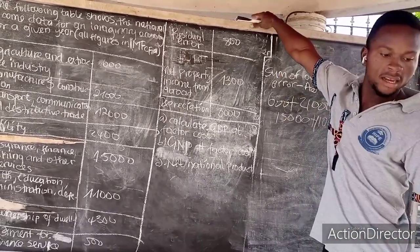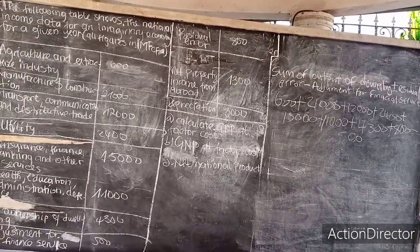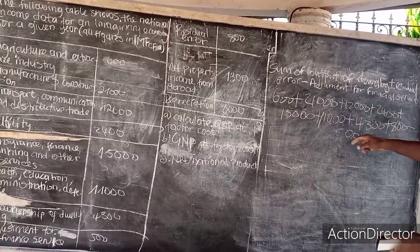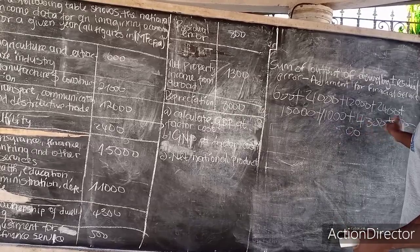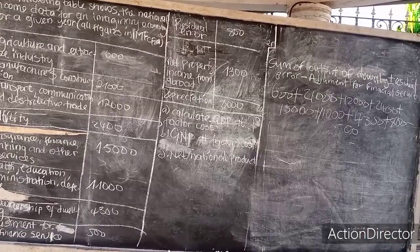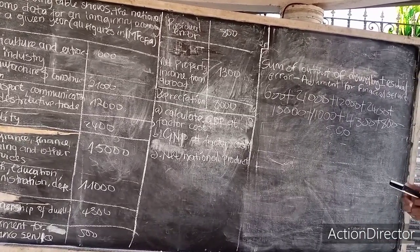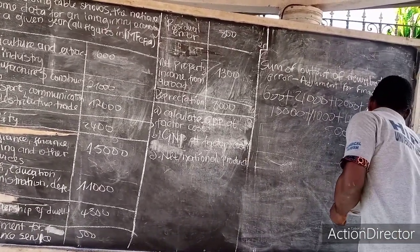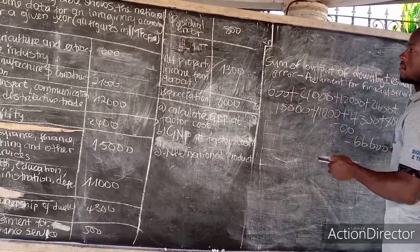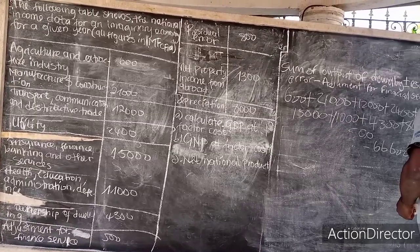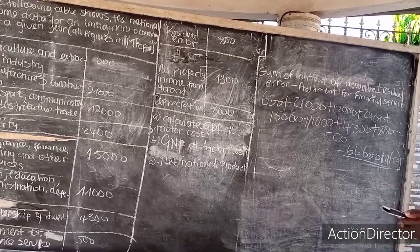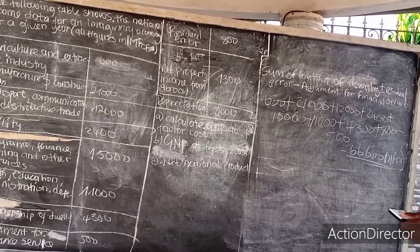Using a calculator to sum all those figures and subtract the adjustment, the total comes out to 66,600 million francs CFA. That is the gross domestic product at factor cost.